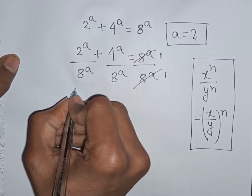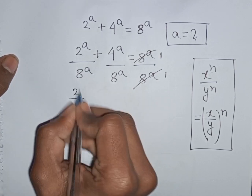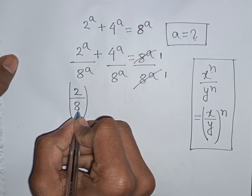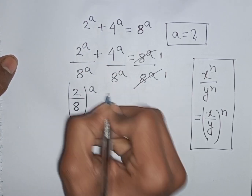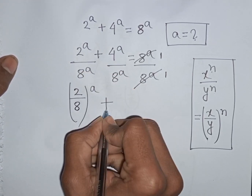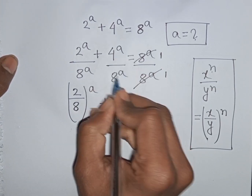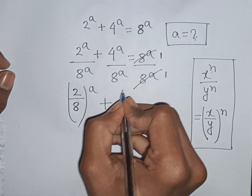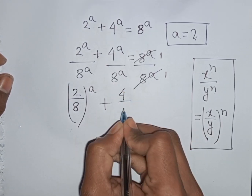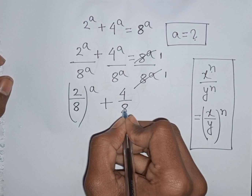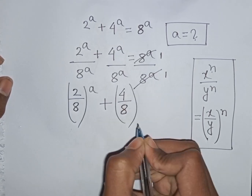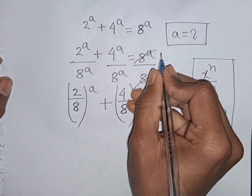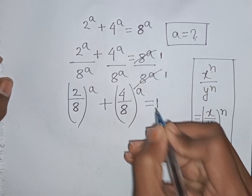According to this exponential rule, I can write here (2/8) bracket common power A, plus again — A, A same power but different base — so according to this exponential rule, we can write here (4/8) bracket common power A is equal to 1 divided by 1, that means it will be 1.